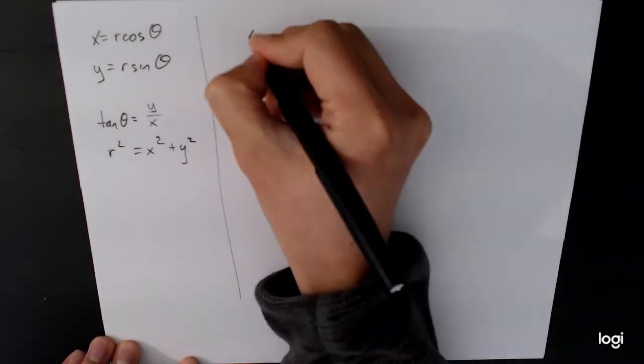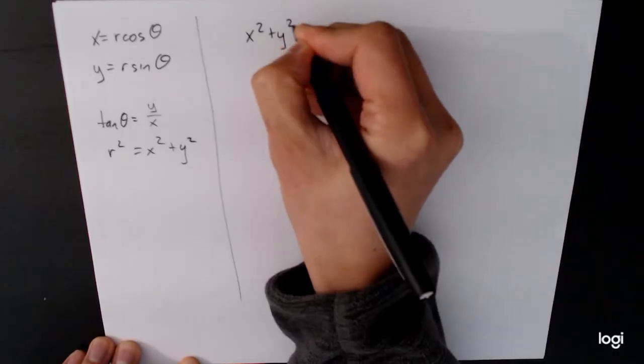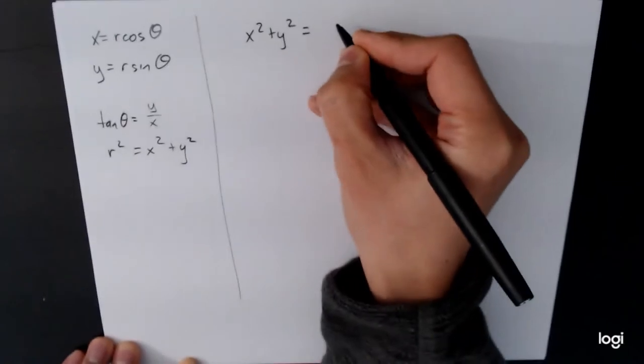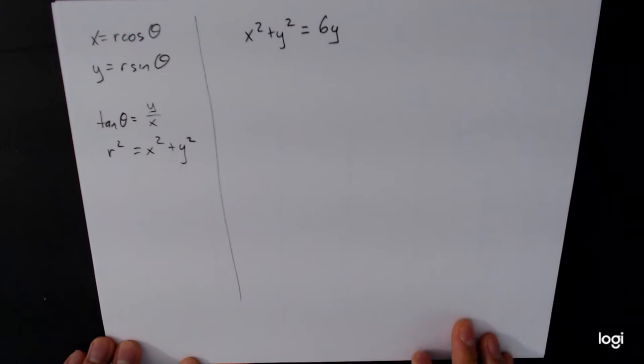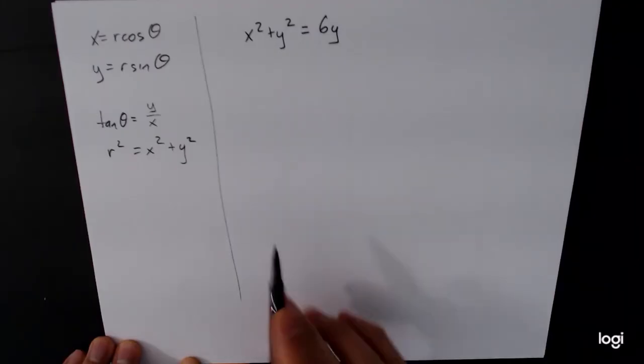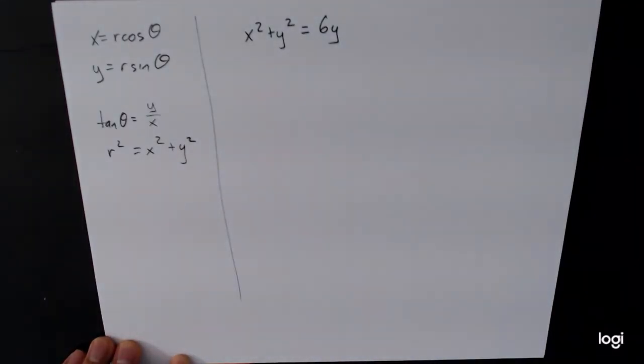Okay, so we're going to start. x squared plus y squared is equal to 6y. We are converting from rectangular to polar. So we need to figure out how to turn these things into r's and thetas.